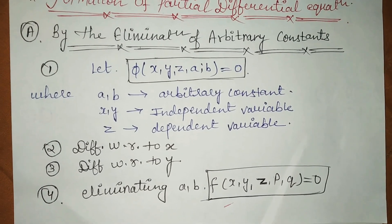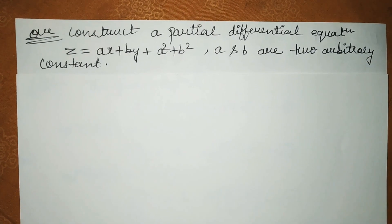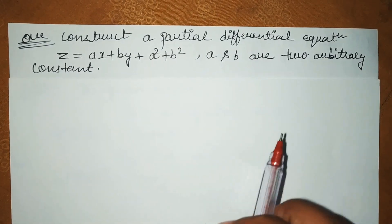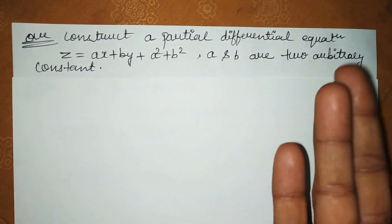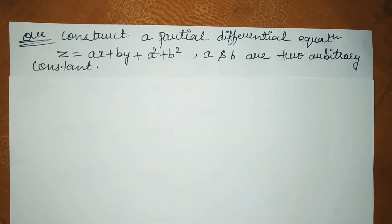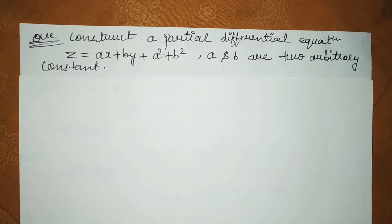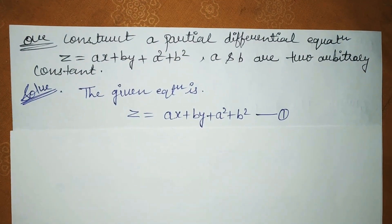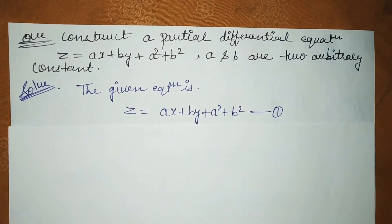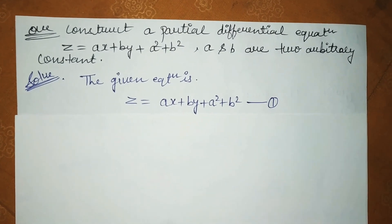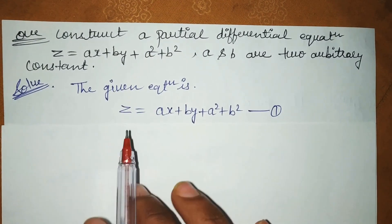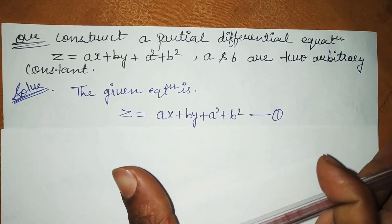So let's see the question. This is the format of your question. Construct the partial differential equation — A and B are arbitrary constants. We have to remove the arbitrary constant, that is A and B. So we have to eliminate A and B from this equation. Now, we differentiate with respect to x. This is your first equation.